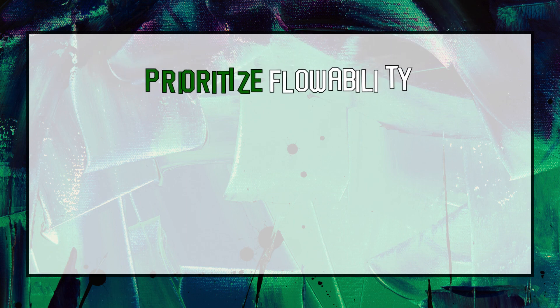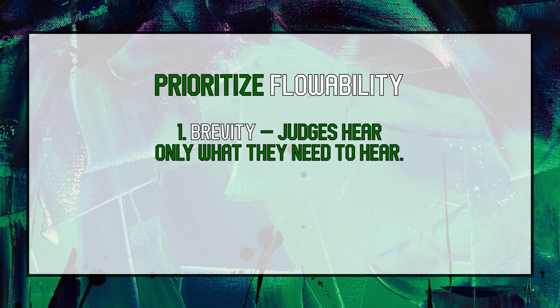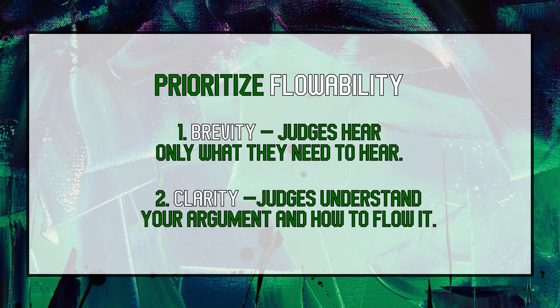Flowability is the standard by which efficiency is judged. Speaking more efficiently is not useful if the judge does not understand and flow your arguments. Both brevity and clarity play an important role in flowability. Brevity ensures the judges hear only what they need to hear and nothing more — get to the point. Clarity ensures the judges understand your argument and, just as importantly, understand how to flow it. This demands short, flowable labels, not long taglines. Don't be unreasonable with your expectations of the judge — make it as easy as possible for them to flow your arguments.